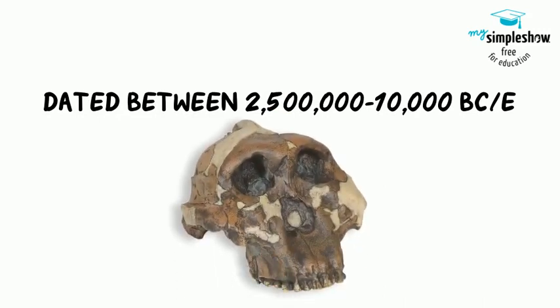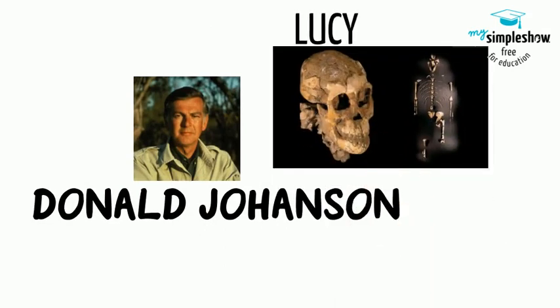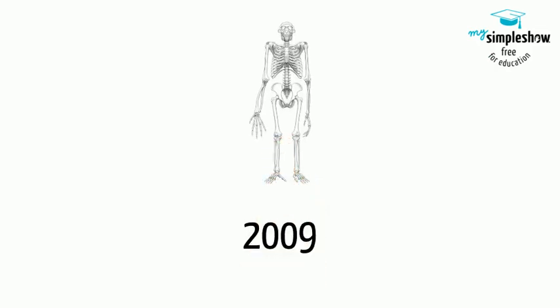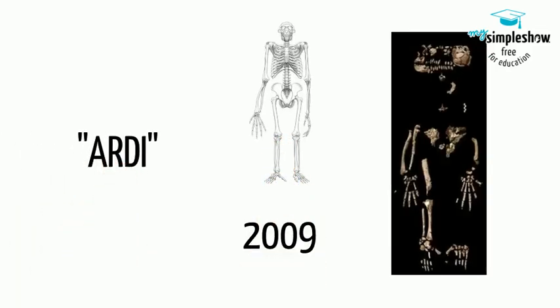The Leakeys found a set of bones dating back two million years ago. In 1974, Donald Johansson found Lucy, a skeleton that dated three million years ago in current Ethiopia. Recently, in 2009, scientists discovered Ardi, a female who lived about 4.4 million years ago in Ethiopia. She stood about four feet tall and walked on two legs and on her palms. She had opposable thumbs and large hands in order to swing from the trees.